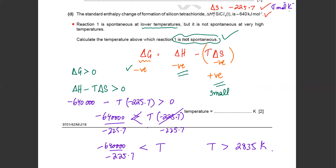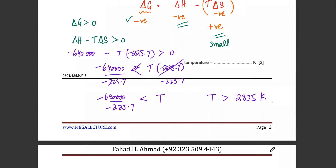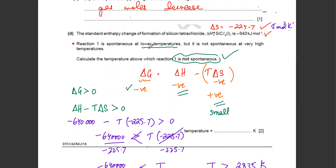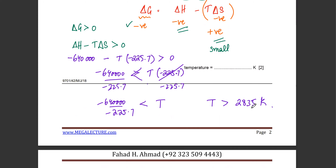The answer is that the temperature above which reaction one is not spontaneous is 2835 Kelvin. The inequality matters if the question hadn't already told you 'above which temperature' — otherwise you wouldn't know whether it's below or above 2835 Kelvin.